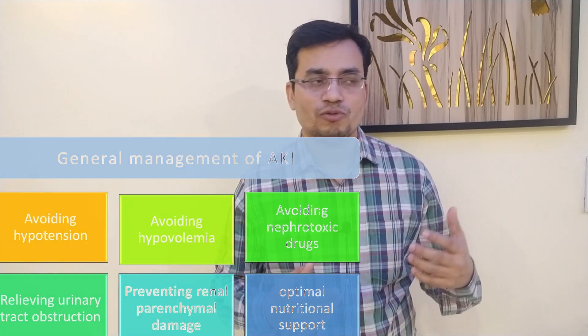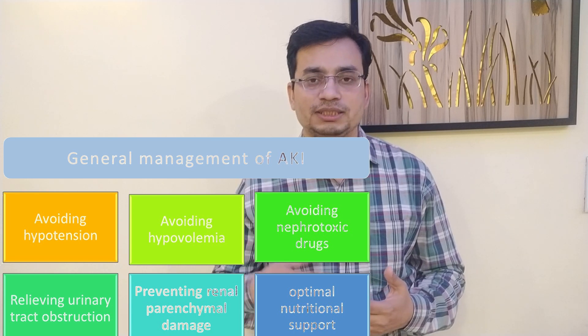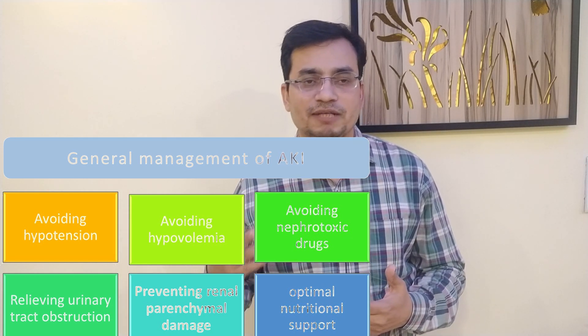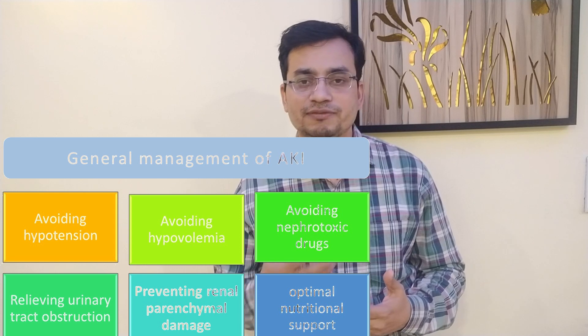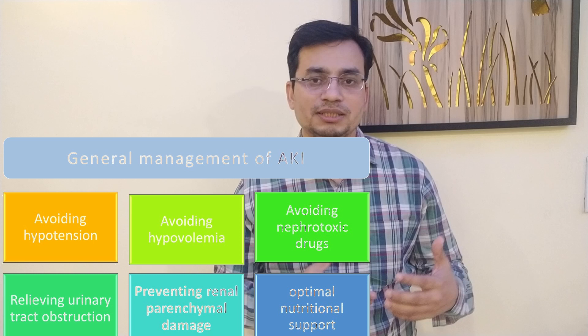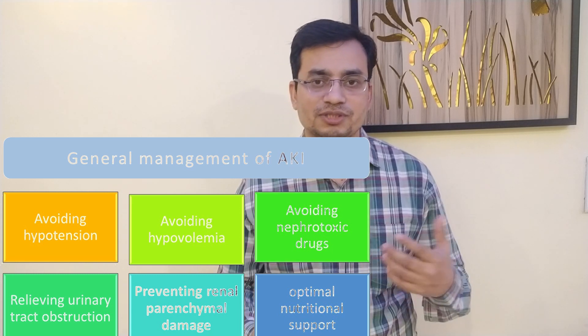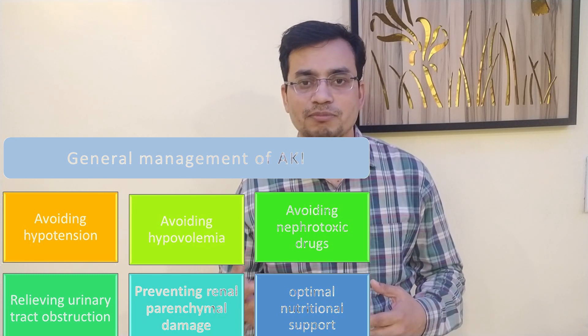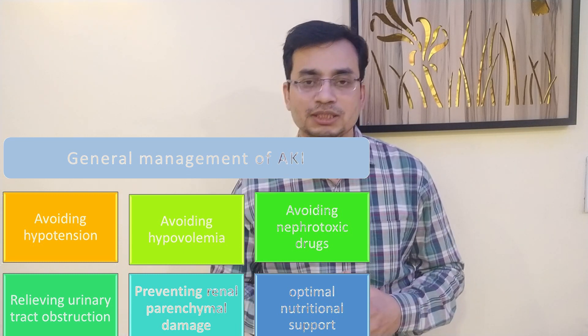Now we will discuss the general management of AKI. The aim is to minimize further damage to the kidneys and promote functional recovery from AKI. This includes: avoiding hypotension, avoiding hypovolemia, avoiding nephrotoxic drugs, relieving urinary tract obstruction with ultrasound, and preventing renal parenchymal damage by treating vasculitis, interstitial nephritis, bilirubin, and myoglobin toxicity. Optimal nutritional support is also important as part of general management.